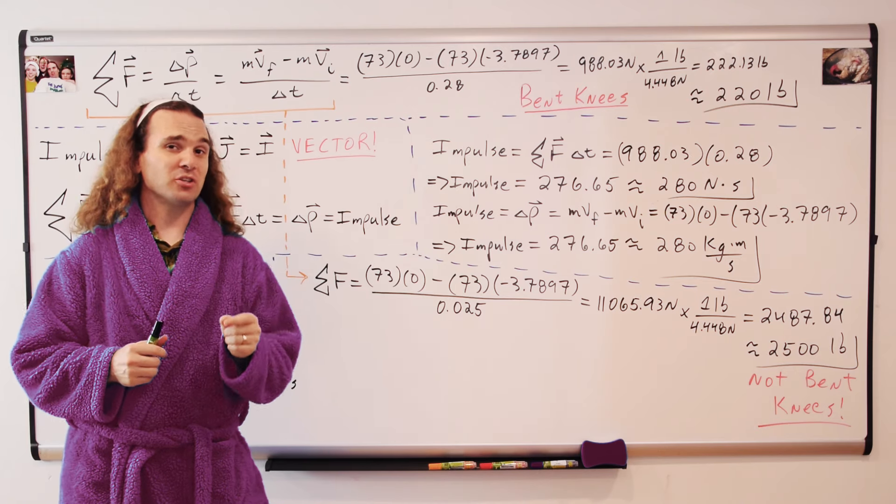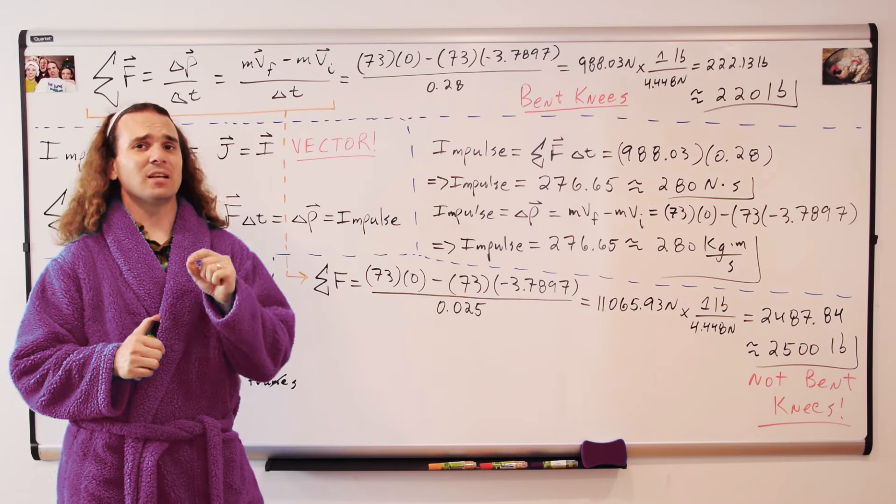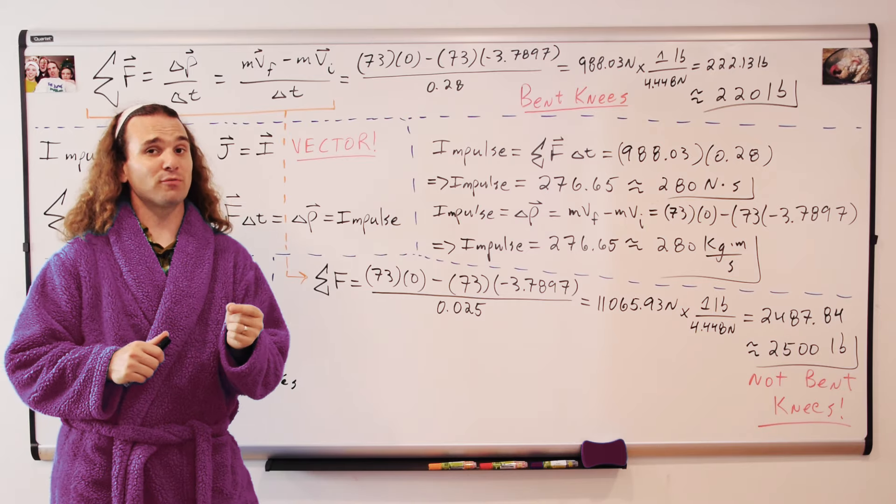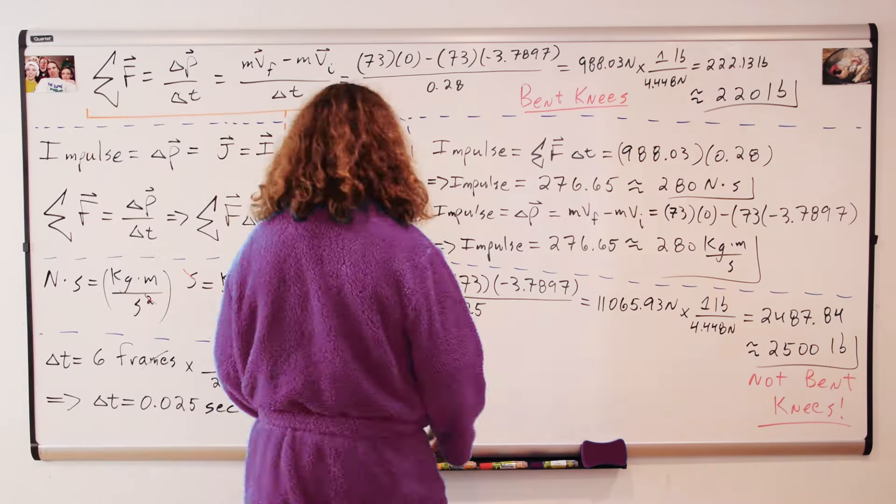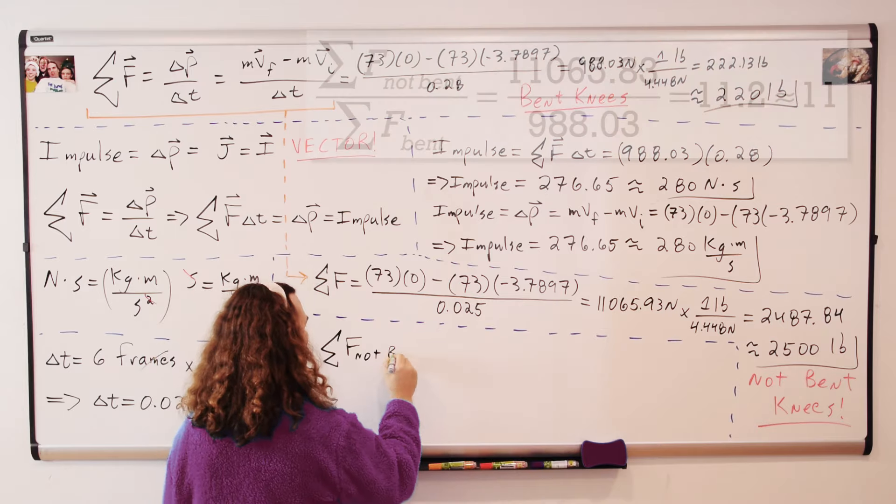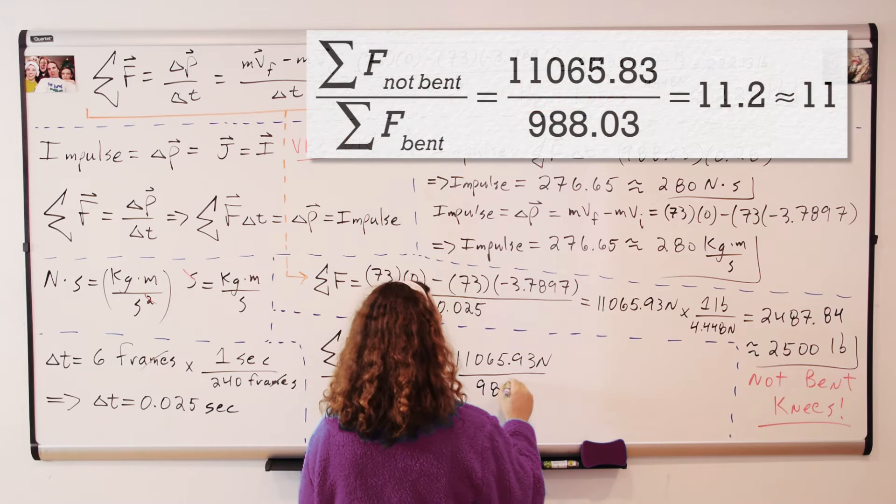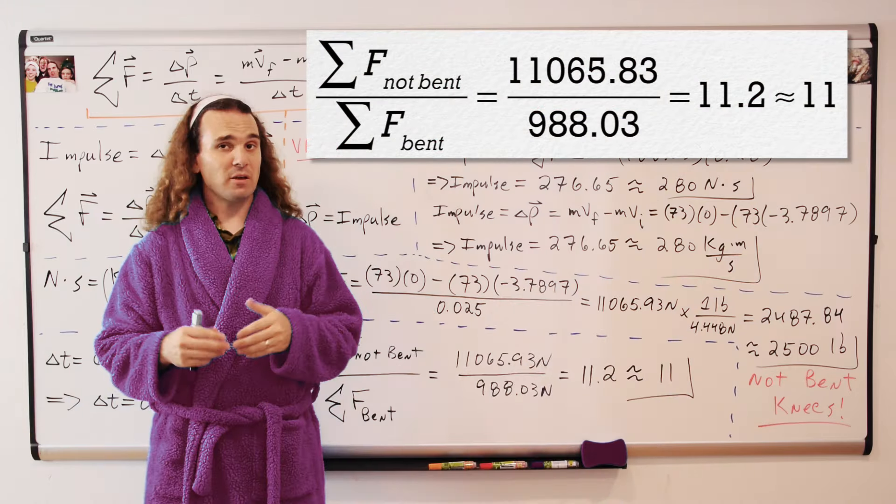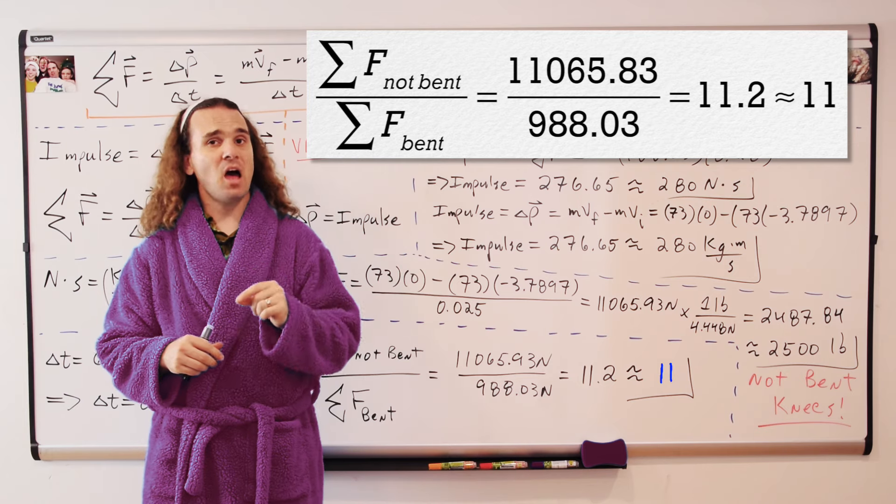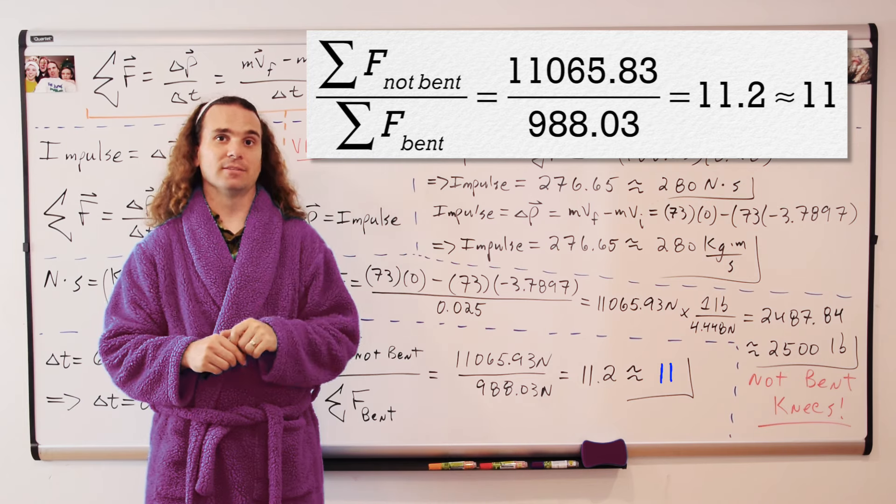Estimating that the time of collision, if I do not bend my knees, is the same as the time of collision for the tomato, means that the force on my body was roughly 11 times what it was before when I bent my knees.